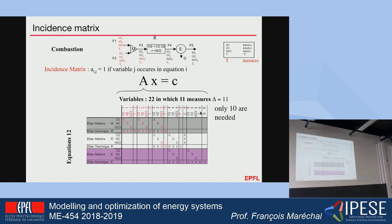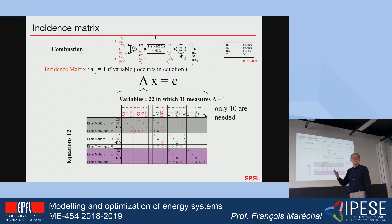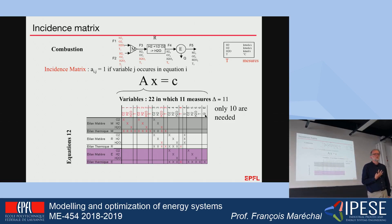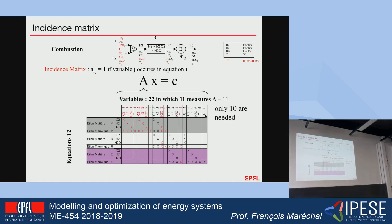I will use the known values to calculate all the unknown values. Listing all equations and all the values I want to know: 22 minus 11 that are measured gives 11 values. I see that I have 12 equations and 11 unknowns. That means something is wrong, because officially I only need 10 measures to solve the problem given that I have 12 equations. So there is most probably a measure that is redundant.